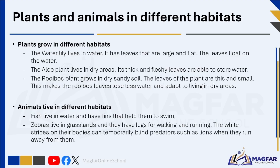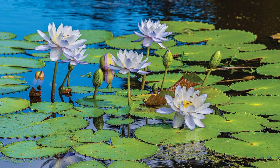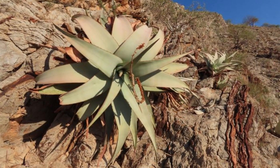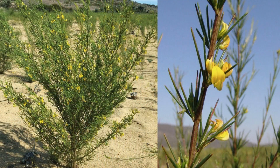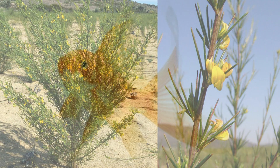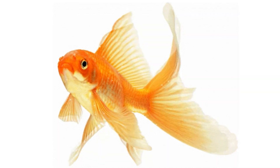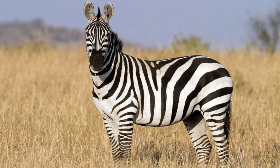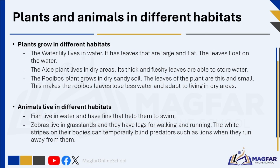The water lily lives in water and has large, flat leaves that float on the surface. The aloe plant lives in dry areas and its thick, fleshy leaves are able to store water. The rooibos plant grows in dry sandy soil and has thin, small leaves that help it lose less water, adapting it to dry conditions. Fish live in water and have fins that help them to swim. Zebras live in grasslands and have legs for walking and running; the white stripes on their bodies can temporarily blind predators such as lions when they run away.